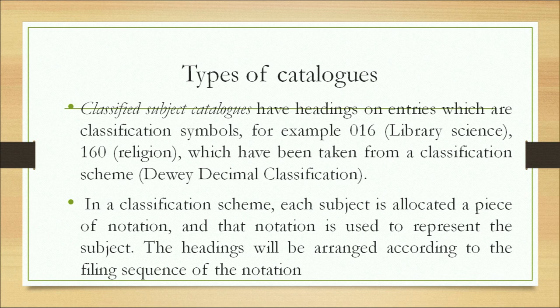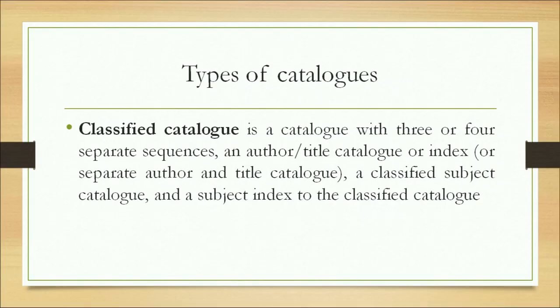In a classification scheme, each subject is assigned a notation representing the content or subject matter of the book. The headings are arranged according to the filing sequence of the notation. A classified catalog may have three or four separate sequences: an author-title catalog or index, a classified subject catalog, and a subject index to the classified catalog. All documents on a subject represented by a common notation are put together.